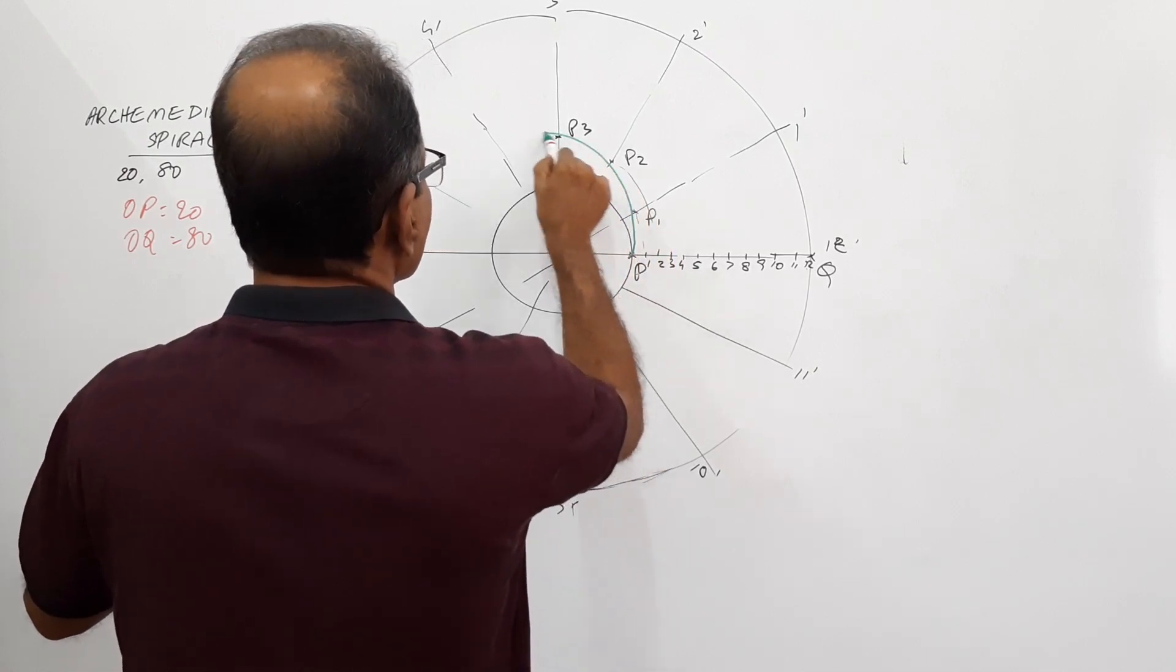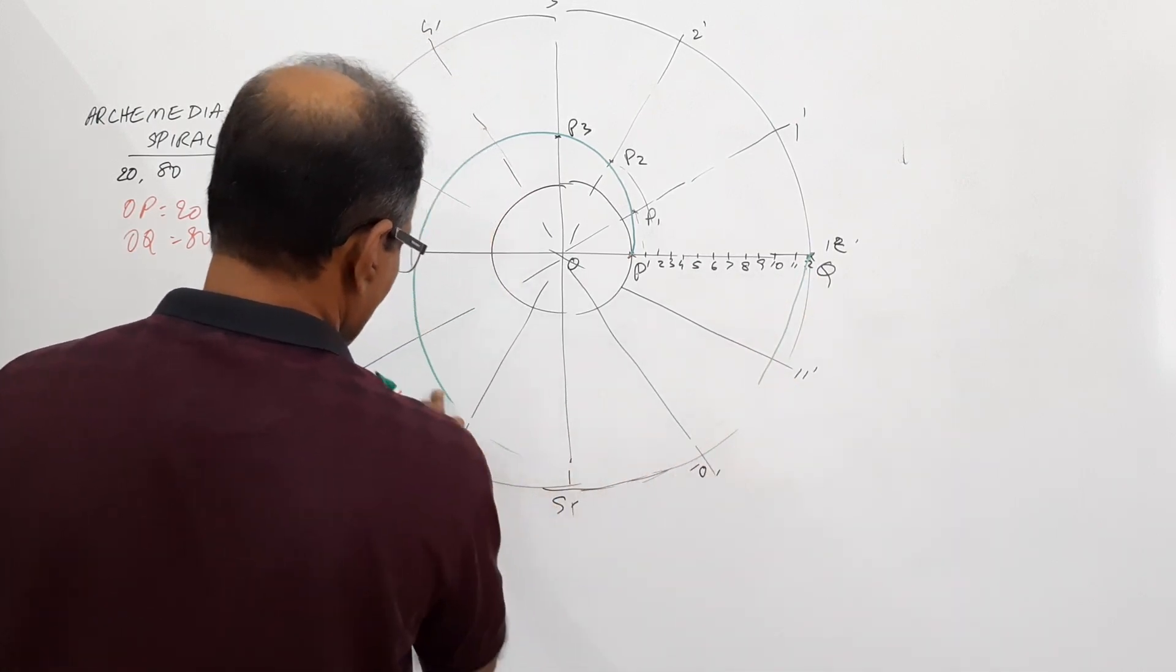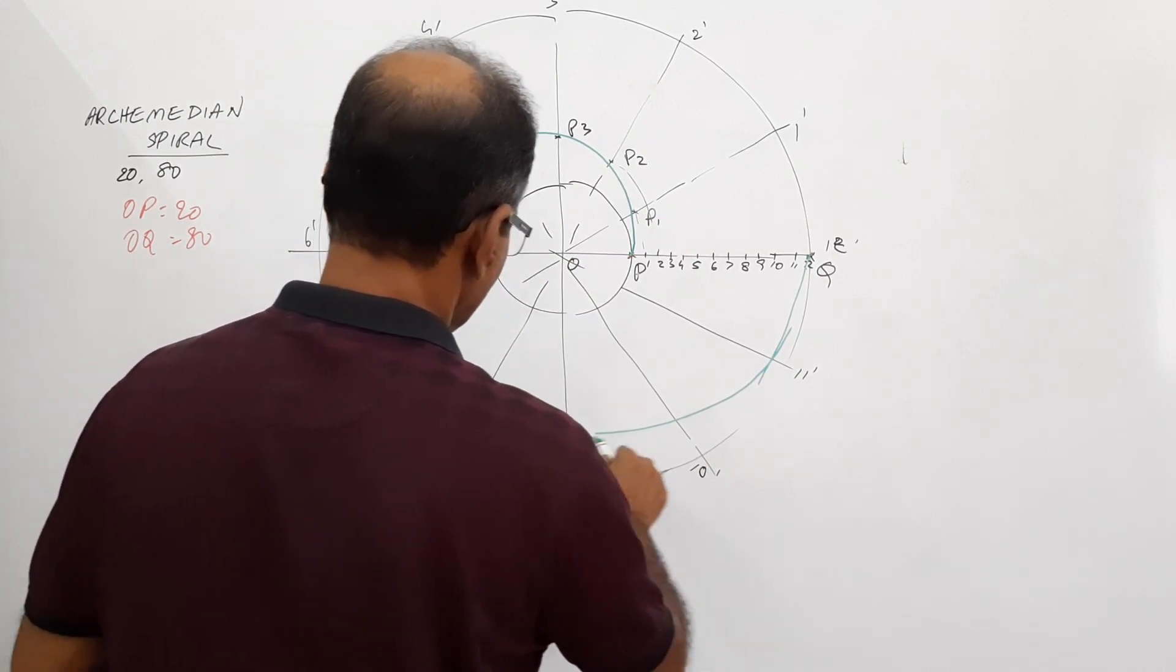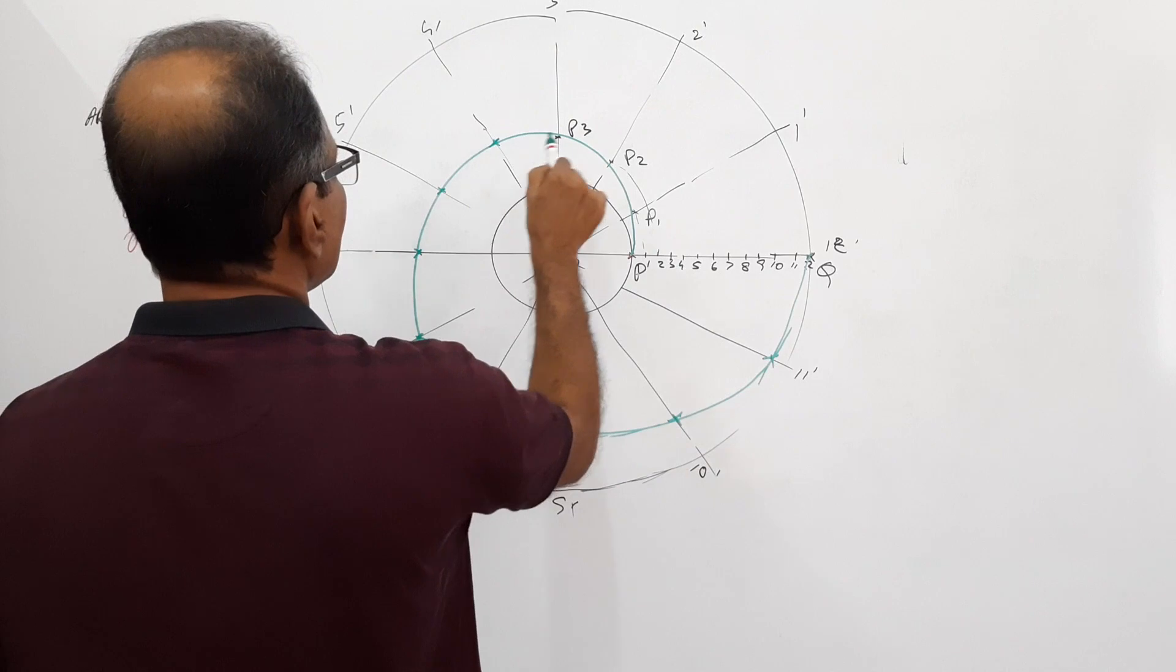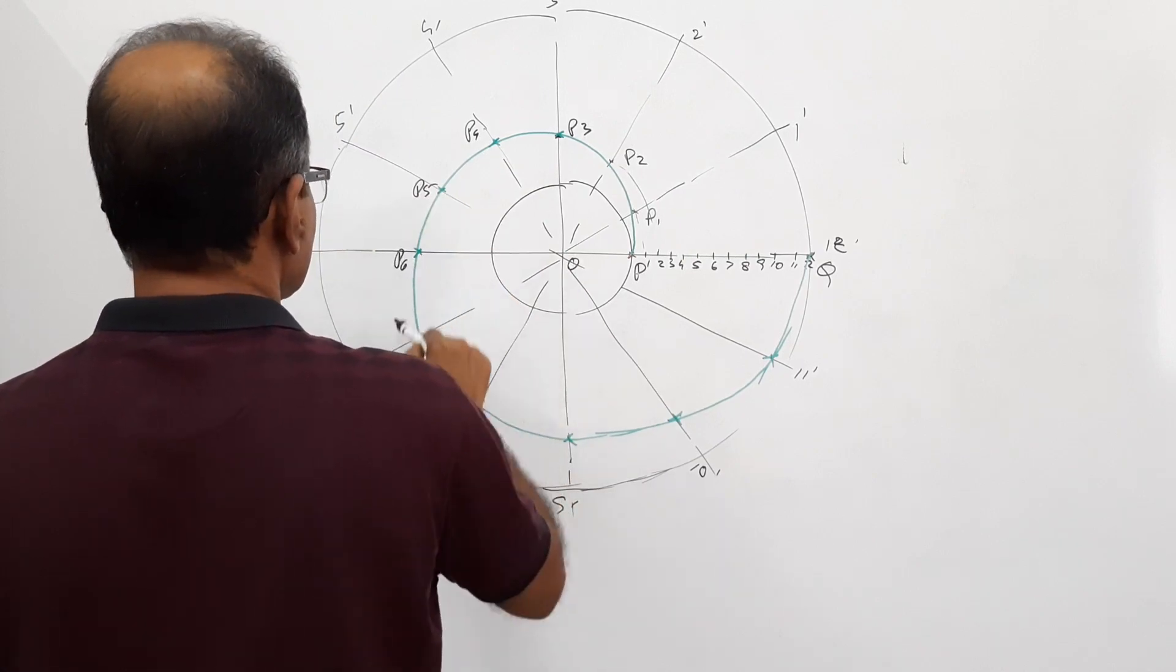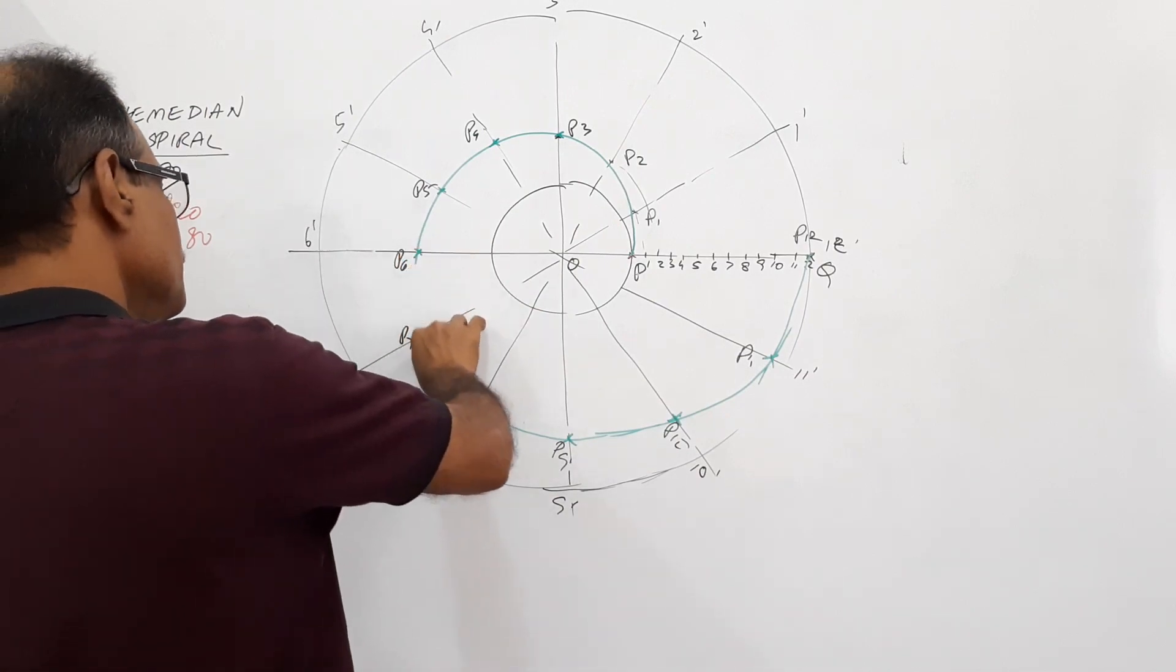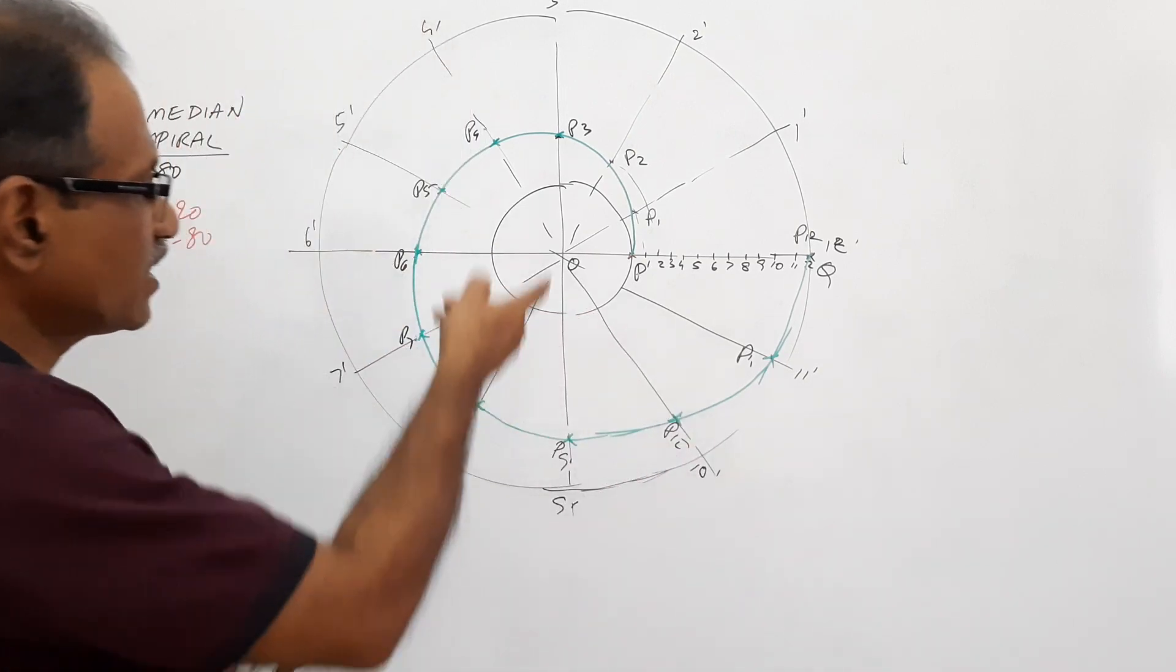It starts from P. My curve is not very good since I am not using instruments. P1, P2, P3, P4, P5, P6, P7, P8, P9, P10, P11, and finally P12. This is the curve. The curve is a smooth curve. You have to draw with your free hand.